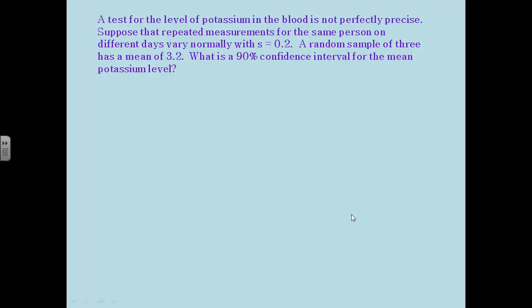All right, let's do another example. A test for the level of potassium in the blood is not perfectly precise. So suppose that repeated measurements for the same person on different days vary normally with a standard deviation of 0.2. We take a random sample of 3 and it has a mean of 3.2. We want to build a 90 percent confidence interval for the mean.